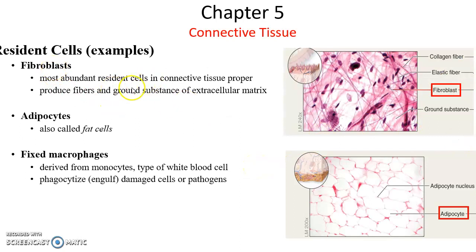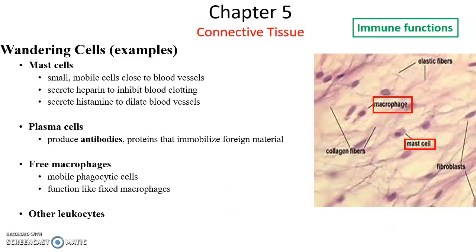Resident cells include fibroblasts, which produce the extracellular matrix. They are present in the loose and dense connective tissues, producing the protein fibers and the ground substance. Adipocytes are the fat cells in adipose tissue. Fixed macrophages stay in the tissue to engulf any pathogens via phagocytosis. The wandering cells come and go, and most have immune-related functions. Mast cells lay close to blood vessels and can secrete substances to inhibit blood clotting and allow dilation of blood vessels, such as histamine. Plasma cells produce antibodies. Free macrophages roam around engaging phagocytosis to engulf pathogens. Other kinds of white blood cells also can come and go.